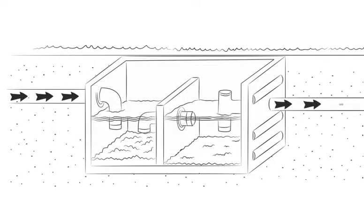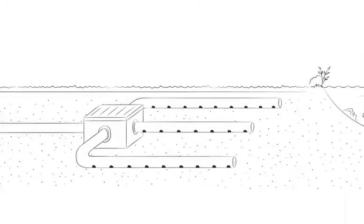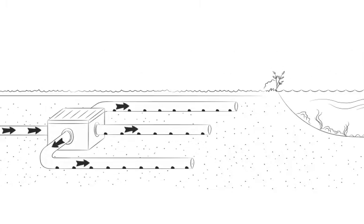If septic systems are not working properly, they'll pass untreated wastewater into the groundwater, polluting nearby streams and lakes.